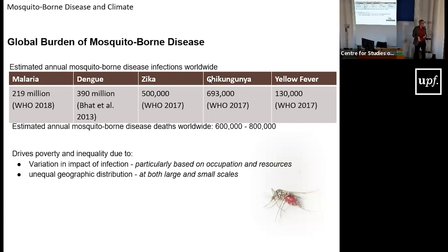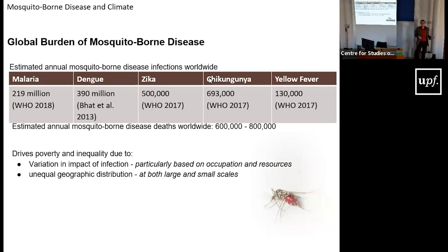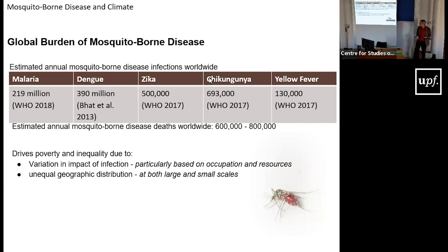Malaria is transmitted by mosquitoes of the Anopheles genus. Dengue, Zika, chikungunya, and yellow fever tend to be transmitted by mosquitoes of the Aedes genus — particularly Aedes albopictus, the tiger mosquito, which is the species we have here, and Aedes aegypti, the yellow fever mosquito, which is actually the most competent vector of dengue and the others. Largely, it has been the spreading process of those mosquitoes around the world that has contributed to the rise of these diseases.